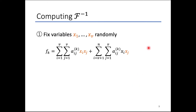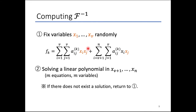When we generate a signature for a given message, we need to invert the central map F. First, we randomly fix the values from x1 to xv. Then the remaining system becomes a linear system of M equations in M variables, due to the construction of the central map F, and we can solve it easily. If there is no solution to this equation, then return to step 1 and choose new random values.